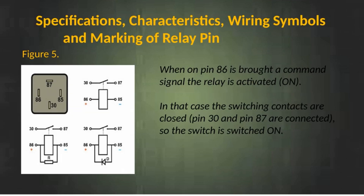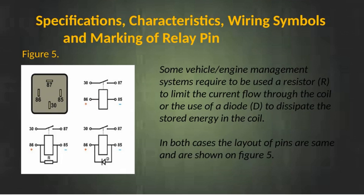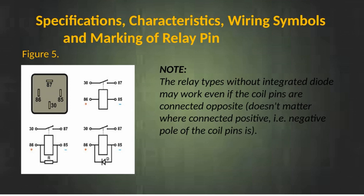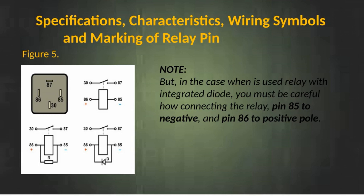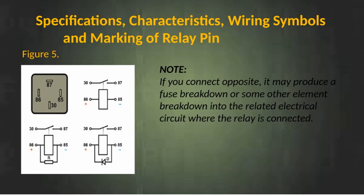When on pin 86 is brought a command signal, the relay is activated. In that case the switching contacts are closed — pin 30 and pin 87 are connected — so the switch is switched on. Some vehicle engine management systems require a resistor to limit the current flow through the coil, or the use of a diode to dissipate the stored energy in the coil. Note: relay types without an integrated diode may work even if the coil pins are connected opposite. But in the case of a relay with an integrated diode, you must be careful how you connect the relay — pin 85 to negative and pin 86 to positive pole. If connected opposite, it may cause a fuse breakdown or other element breakdown in the related electrical circuit.